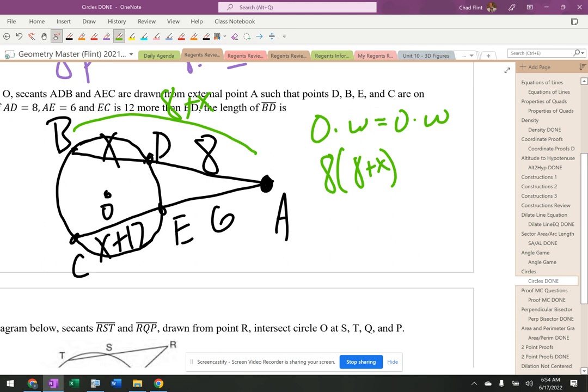And then this other one equals 6 times this whole thing, which is X plus 18, 6 times X plus 18. So I have to add the two pieces together.